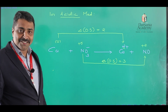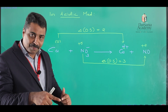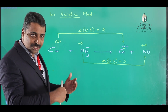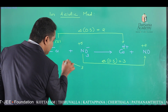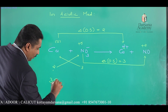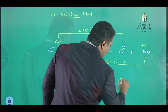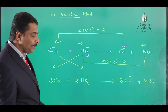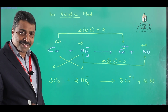For copper, the change in oxidation state is 2, and for nitrate ion it is 3. Just cross multiply by the change in oxidation state: 3 is multiplied with copper and 2 is multiplied with nitrate ion. Therefore, we can write: 3Cu + 2NO₃⁻ → 3Cu²⁺ + 2NO.